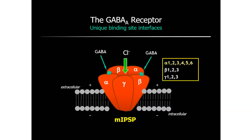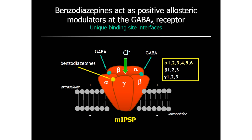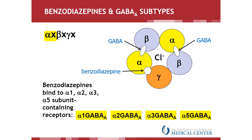Benzodiazepines act by binding to a specific type of GABA receptors called the GABA-A receptors. GABA-A receptors are composed of five distinct subunits, with GABA binding to the site between the alpha and the beta subunits. Binding of two GABA molecules leads to the opening of this ion channel, and benzodiazepines bind to a separate binding site located between the alpha and the gamma subunits. GABA binding is still necessary for benzodiazepines to exert their effect, and because of that they're considered positive allosteric modulators of the GABA-A receptor. The major targets for benzodiazepines are GABA-A receptors containing alpha-1, alpha-2, alpha-3, and alpha-5 subunits, and conventional benzodiazepines like alprazolam or diazepam are non-selective, meaning they bind to all four of these subtypes.